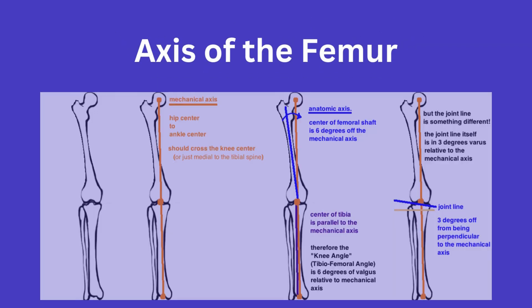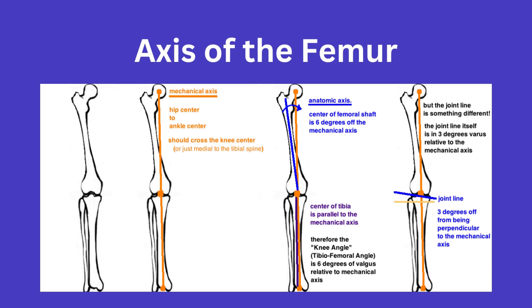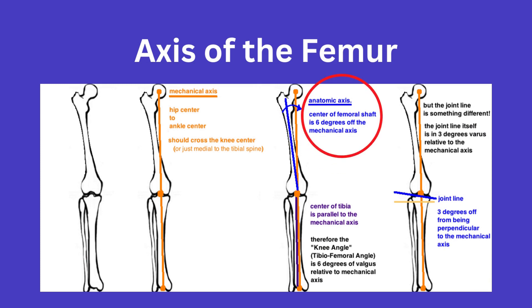Just because you might get pimped on what exactly the horizontal line is — here you can see the femur has both an anatomic and mechanical axis. The horizontal line is orthogonal to the anatomic axis.